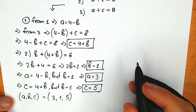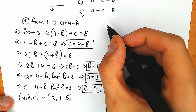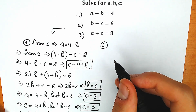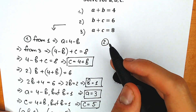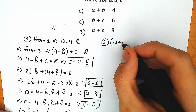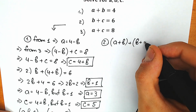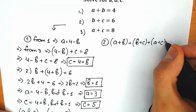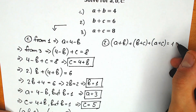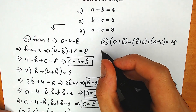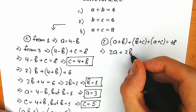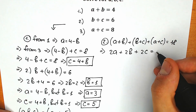Now the second method, which I'll write on the right side — a different and really great approach. First, we add all three equations together: a plus b, plus b plus c, plus a plus c equals 4 plus 6 plus 8, which gives us 18. Simplifying the left side, we get 2a plus 2b plus 2c equals 18.